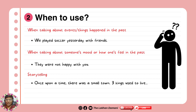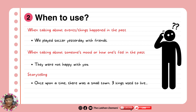When to use past simple: there are three common points. First, when talking about events or things that happened in the past. For example, we played soccer yesterday with friends — so we were playing yesterday, the thing has already happened.